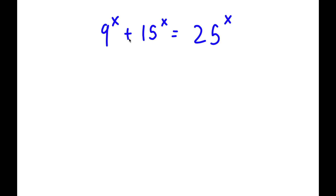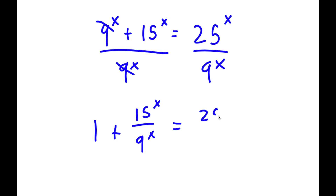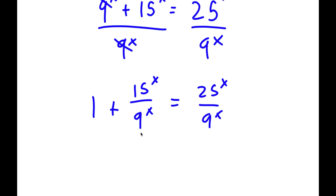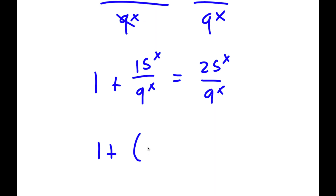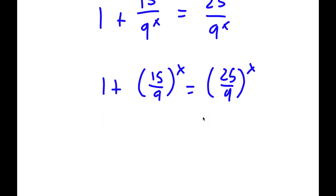In this problem, I have 9 to the power of x plus 15 to the power of x is equal to 25 to the power of x. The first thing I'm going to do is divide both sides by 9 to the power of x. So now I have 1 plus 15 to the power of x over 9 to the power of x, equals 25 to the power of x over 9 to the power of x. This is the same as 1 plus 15 over 9 to the power of x equals 25 over 9 to the power of x. Now, 15 over 9 simplifies to 5 over 3.